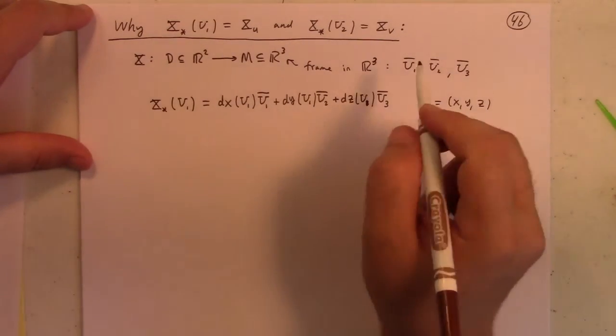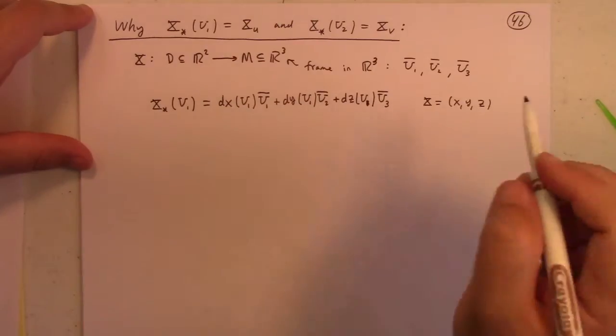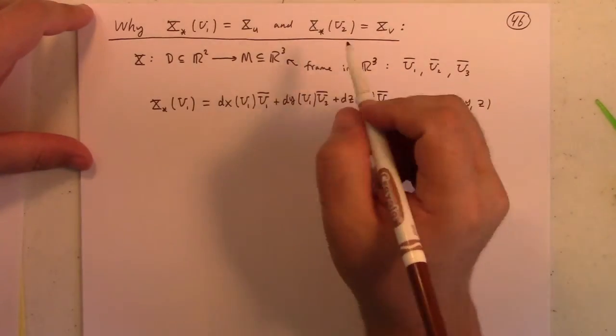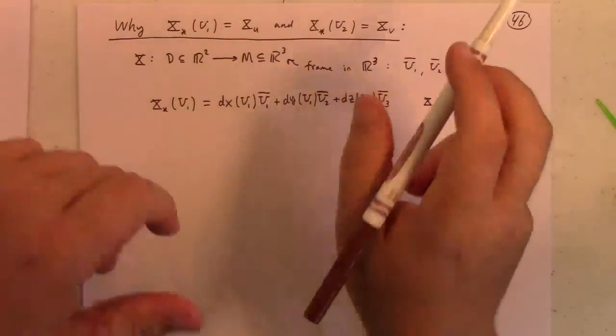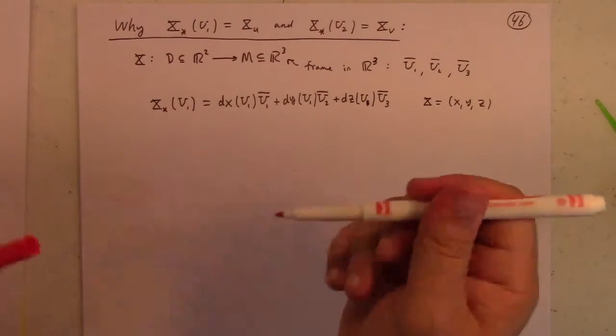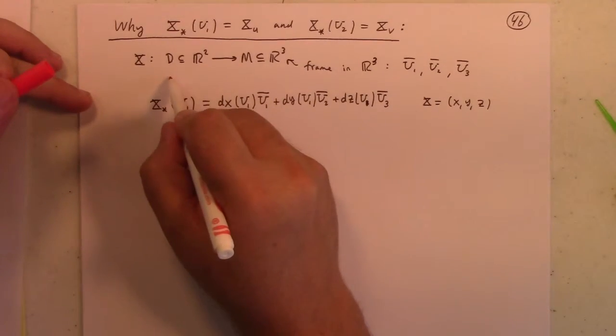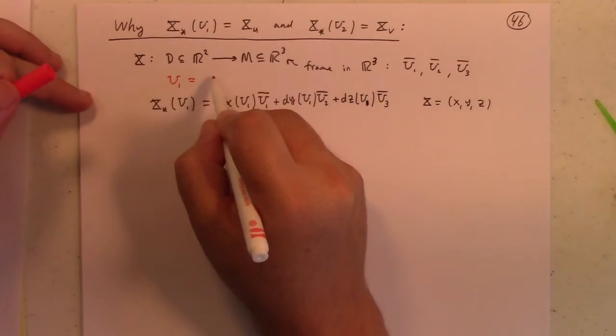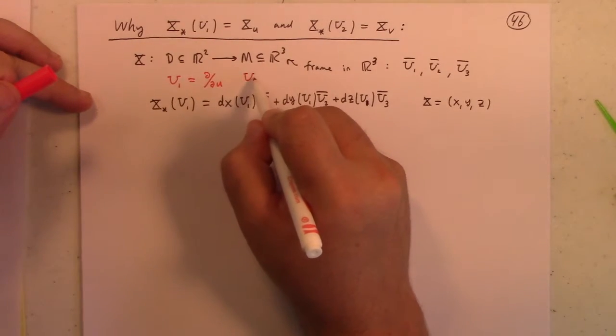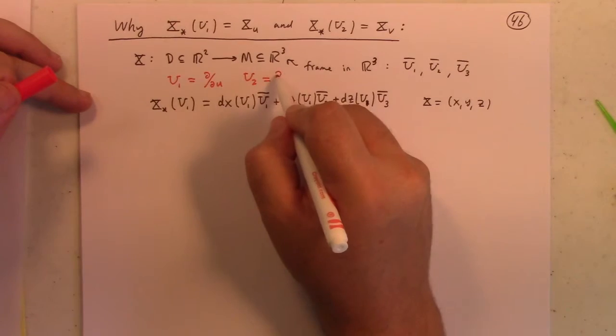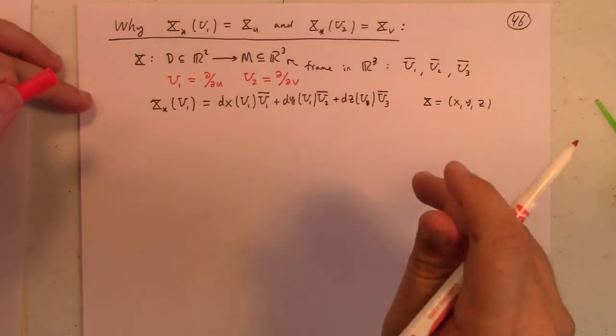But what is this? Well, U1, remember, another way to think about U1 is that, and maybe this is a good example of why it's maybe better to use this notation, the partial notation, as opposed to the other notation, because it's more manifest what's going on.